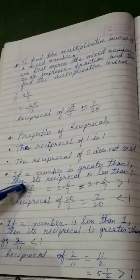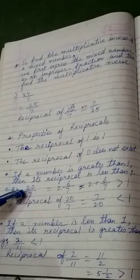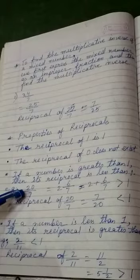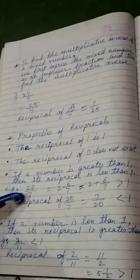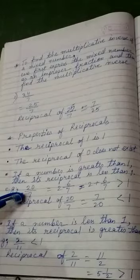Like, if we have taken a number, 20 by 7 can be written in mixed fraction as 2 whole 6 by 7, that is equals to 2 plus 6 by 7. That means, it is 2 plus 6 by 7th part, that is greater than 1. 2 plus some value, that always must be greater than 1.